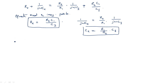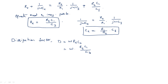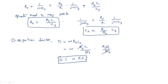For the dissipation factor: D = ωRxCx = ω × (R2C1/C3) × (R1C3/R2). Here C3 cancels with C3 and R2 cancels with R2, leaving simply D = ωR1C1. The dissipation factor or peak factor equals ωR1C1.